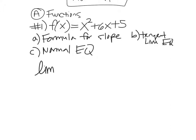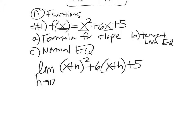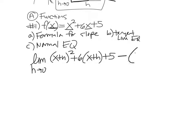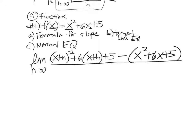We're going to take the limit as h goes to 0. The f of x plus h part is where people get confused — you're taking x plus h and plugging it into the function. So you square it: x squared plus 2xh plus h squared, then 6 times x plus h gives 6x plus 6h, and still plus 5. Then minus f of x, which is x squared plus 6x plus 5, all over h.